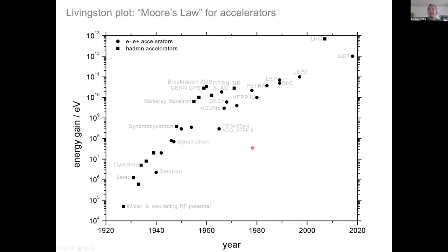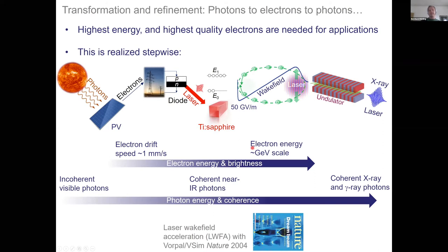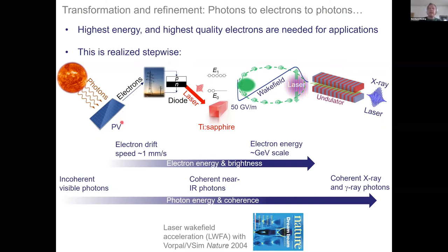This is the so-called Livingston plot — something like Moore's Law for accelerators — which visualizes that the energy gain over decades is no longer sustainable with commercial technology. The slope of the energy gain over the years is decreasing, and you can't afford many more machines. Taking a step back, what happens in all these machines used for research and imaging is a constant energy transformation: photons to electrons to brighter photons, more coherent photons, and higher energy electrons. Starting from the sun, which emits incoherent broadband blackbody photons.